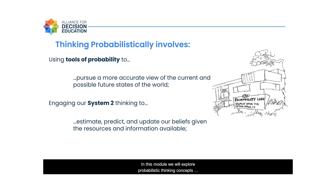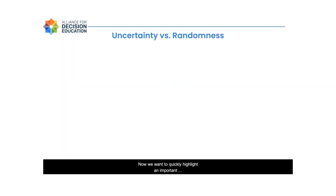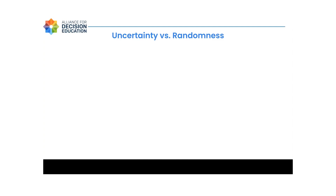In this module, we will explore probabilistic thinking concepts that when practiced and honed can lead to more rational decision making. We want to quickly highlight an important distinction between things in the world that are uncertain but for which we can do things to mitigate that uncertainty, versus the rare events that are truly random — meaning every time they happen, they're truly unpredictable.